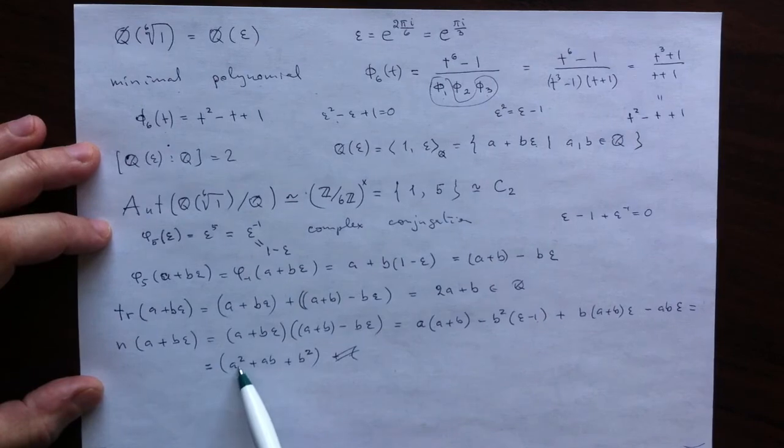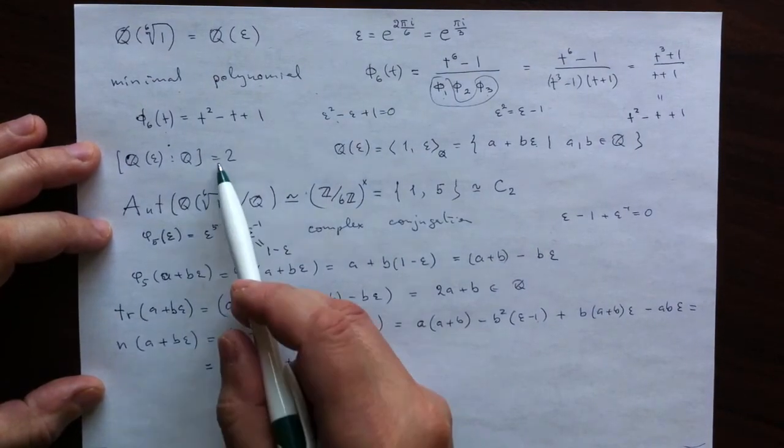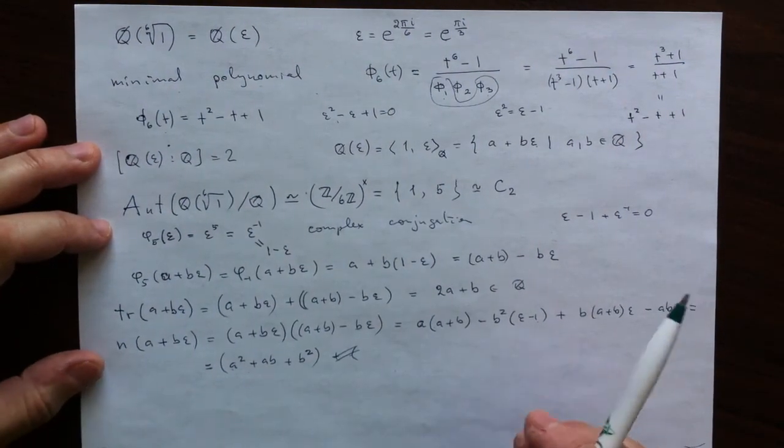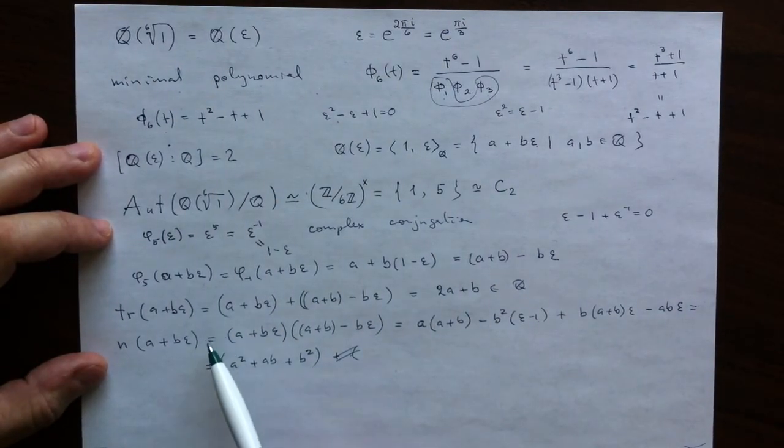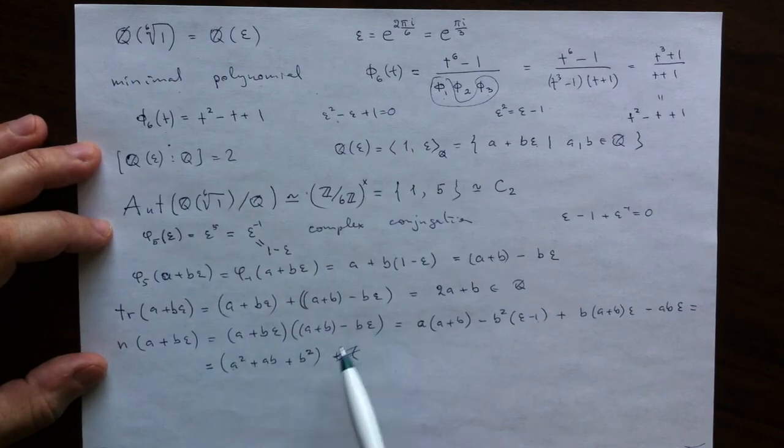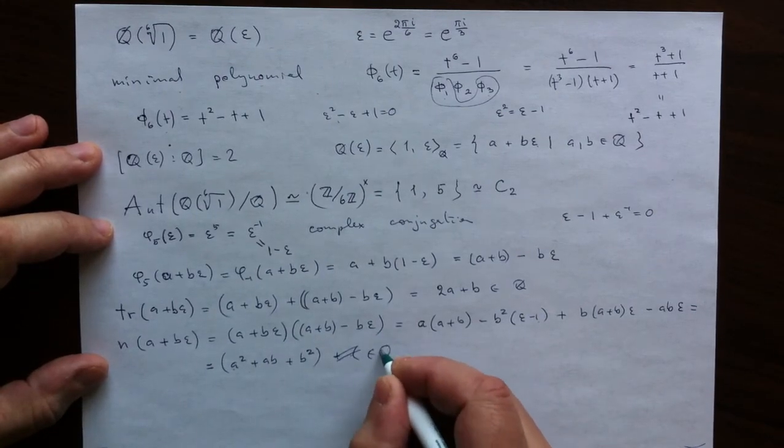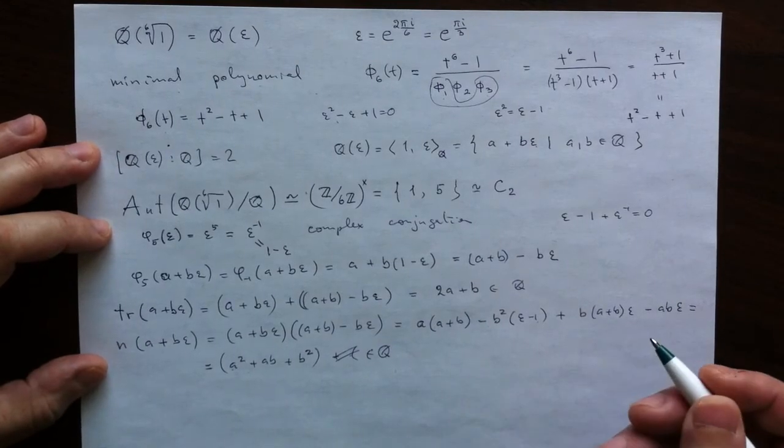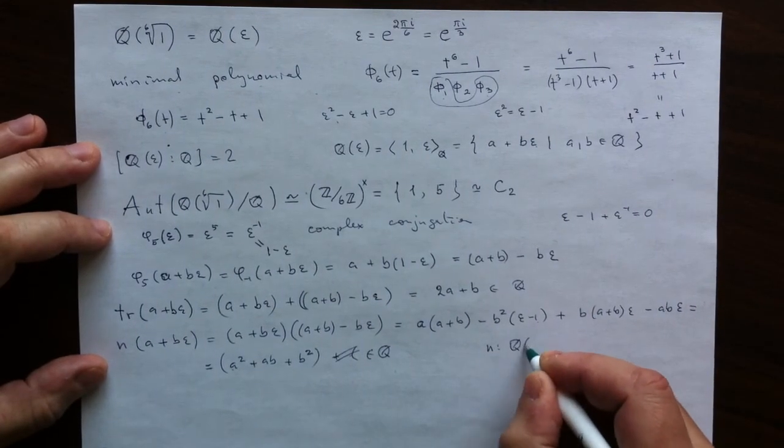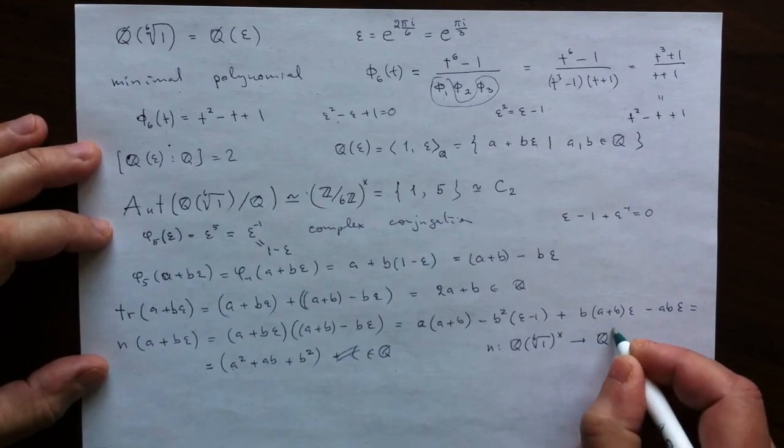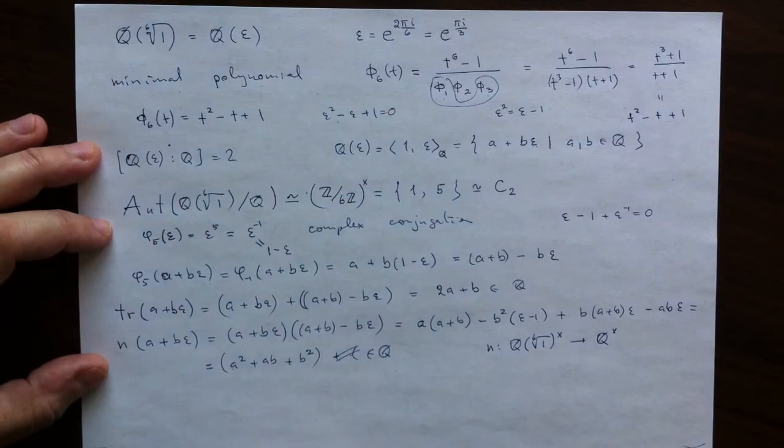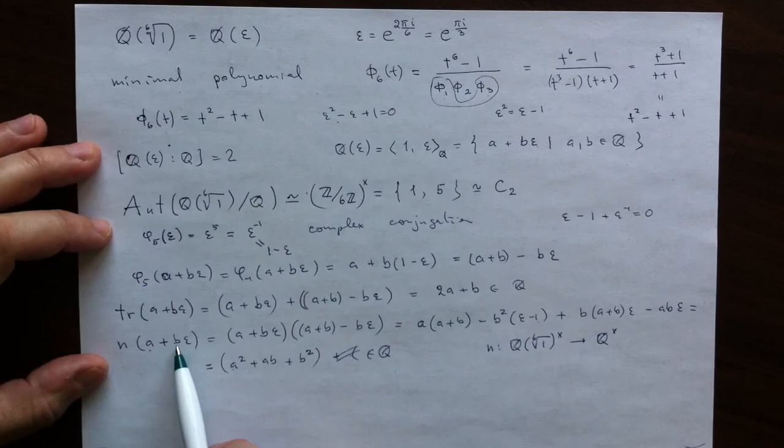The degree of the norm as a function, as a polynomial function, is always the degree of the extension. You can see it immediately. And that is the quadratic function which computes the norm. And again, by the sheer nature of it as being a product, it is never 0. So this is a rational number. And this is not 0. Really the norm is a multiplicative group homomorphism. Non-zero elements go to non-zero elements. So non-zero means that either A or B is non-zero. Just not both are 0.